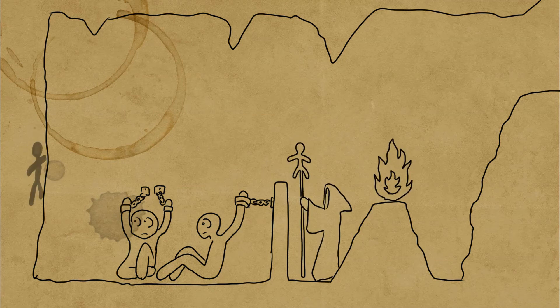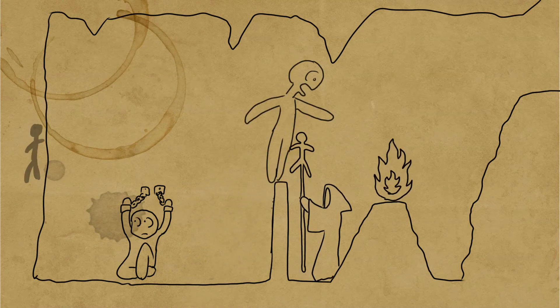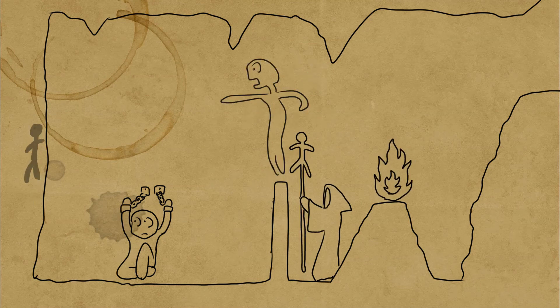Plato postulates that one prisoner could become free. He finally sees the fire and realizes the shadows are fake.